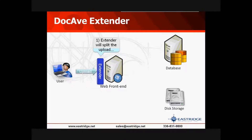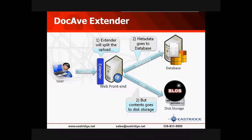If we look at an example here, we have a user who is trying to upload to SharePoint. The Extender is going to split the upload — this is assuming the upload is maybe a large file that fits the criteria that we had set up for DocApp Extender. So to the user, it looks like the file is uploaded, and in fact the metadata is uploaded to SQL Server along with the stub. But the actual file itself — the blob, the binary large object — is going to go to disk storage, which is a file share somewhere.